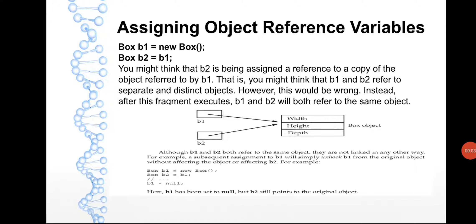Welcome. In this video we will see how to assign object reference variables. Here you can see the example: Box is a class where we have created one variable called b1. Using the new operator we are going to create the object. When we create the object, by default the constructor will be called and memory will be allocated for the variables which are available inside the class.